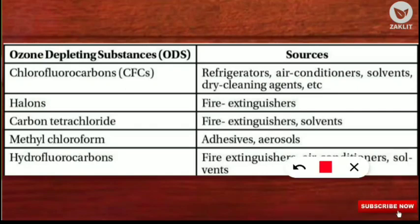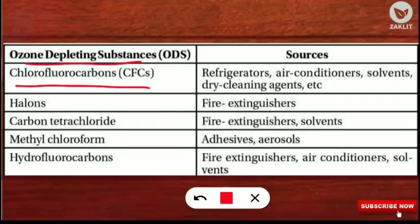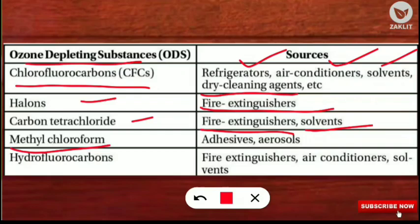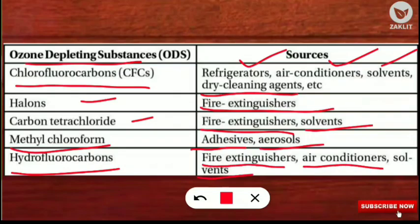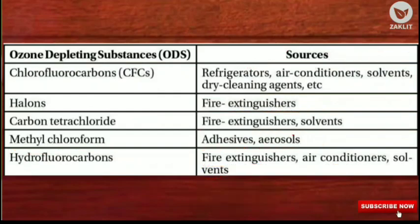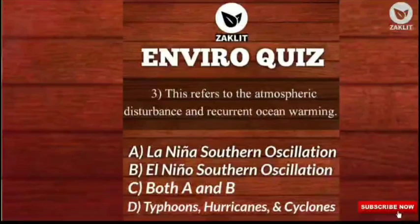Chlorofluorocarbons (CFCs) are very important ozone depleting substances found in refrigerators, air conditioners, solvents, and dry cleaning agents. Halons, found in fire extinguishers, are also ODS. Carbon tetrachloride is found in fire extinguishers and solvents. Methyl chloroform is found in adhesives and aerosols. Hydrofluorocarbons (HFCs) are also ODS but less powerful than CFCs, used in fire extinguishers, air conditioners, and solvents. You should make a table of these ODS and their sources.